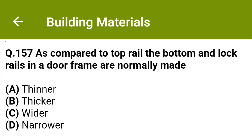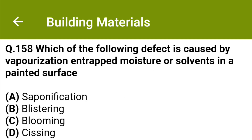Which of the following defects is caused by vaporization of entrapped moisture or solvents in a painted surface? Option A saponification, option B blistering, option C blooming, option D cracking. The correct answer is option B: blistering.